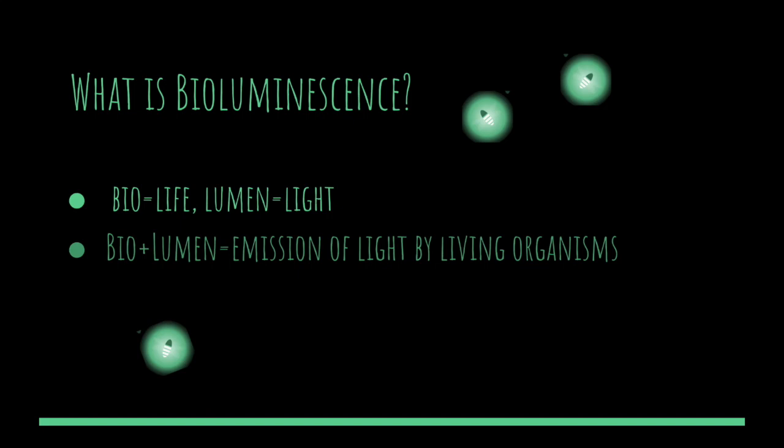Bioluminescence is a special type of chemiluminescence, a term that describes the chemical production of light. Bioluminescence is more specific as it pertains to the process of living things producing light. Most luminescent animals have their own specialized light-producing organ, or house symbiotic luminescent bacteria in their own light-producing cells.